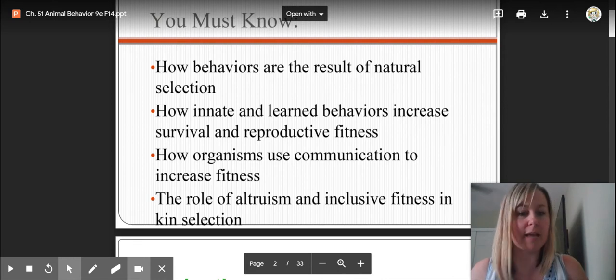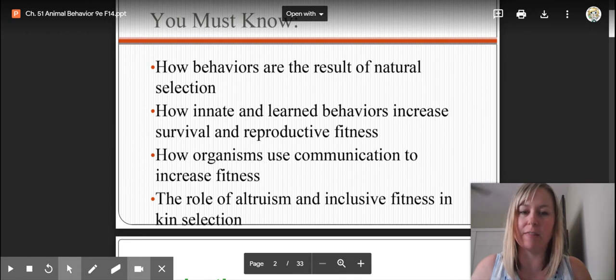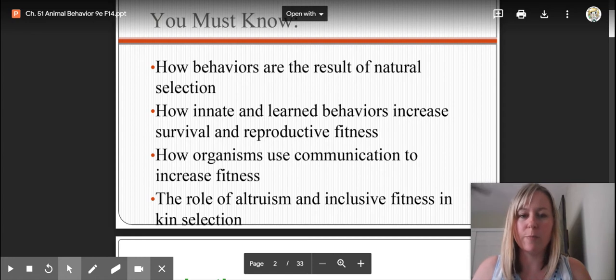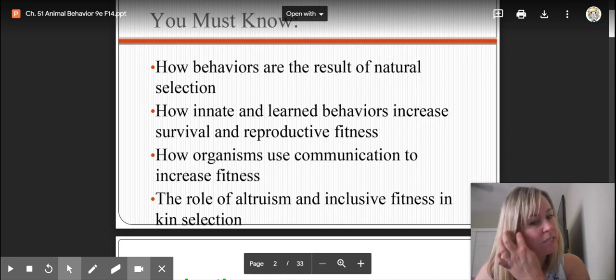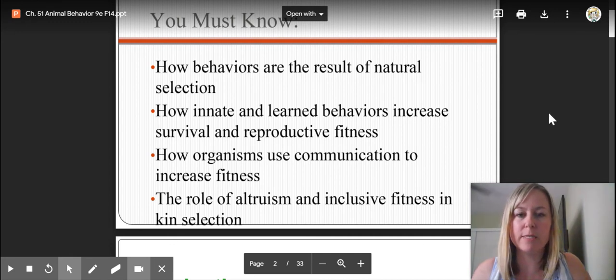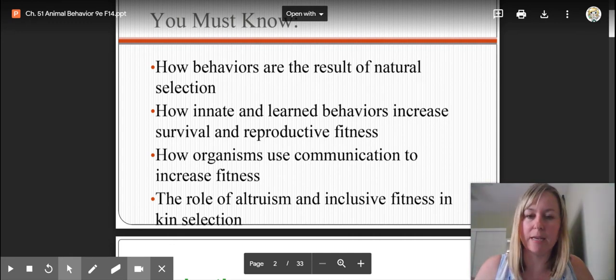How behaviors are the result of natural selection. Everything goes back to evolution, right? The ultimate cause of behaviors. We always think that just certain attributes, like physical attributes, have to do with evolution or are shaped by natural selection. But so are behaviors because they influence survival. How innate and learned behaviors increase survival and reproductive fitness. How organisms use communication to increase their fitness and the role of altruism and inclusive fitness and kin selection. That one is something super quick. I'm going to focus mostly on innate and learned behaviors and animal communication.